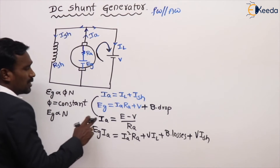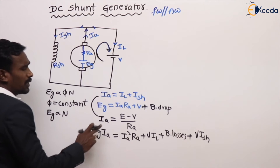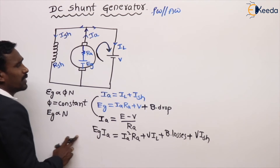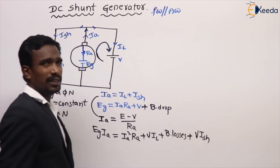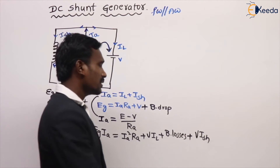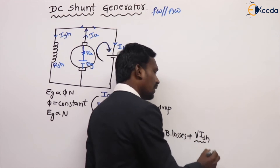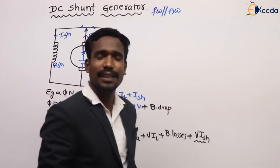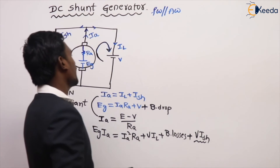This is generally the current, voltage, and power equations of the DC shunt generator. This shunt field loss is the extra term added compared to the separately excited generator.